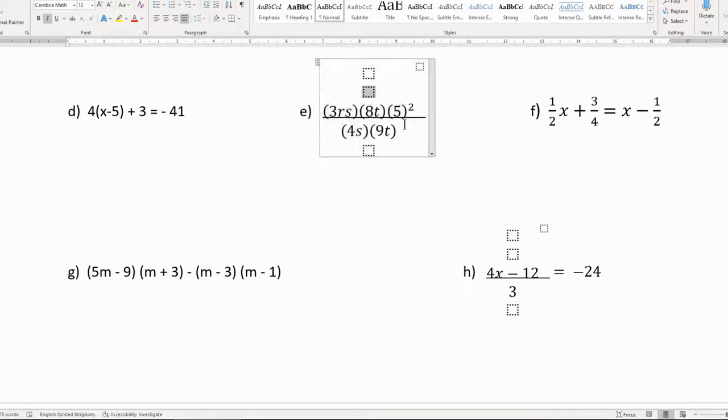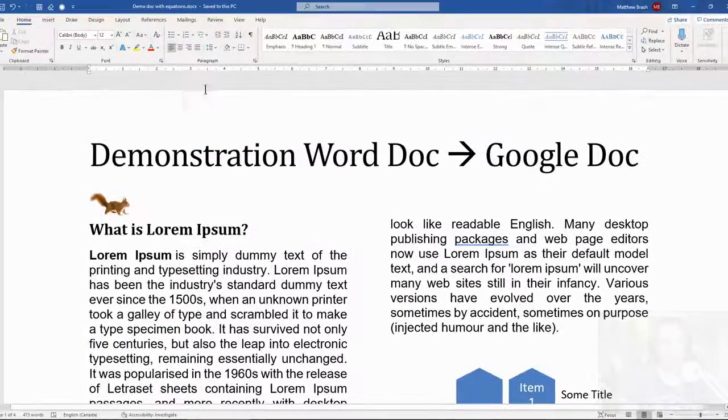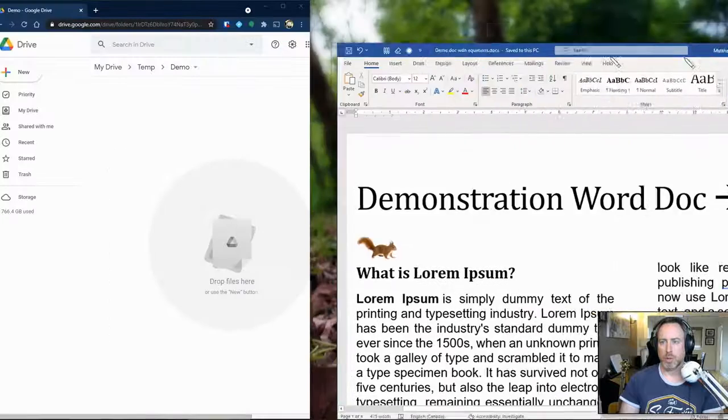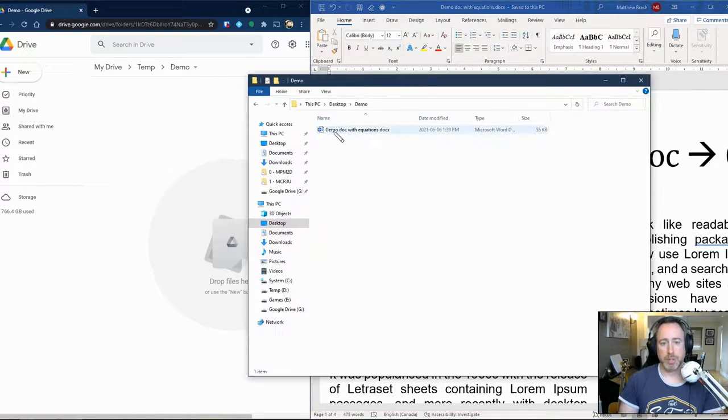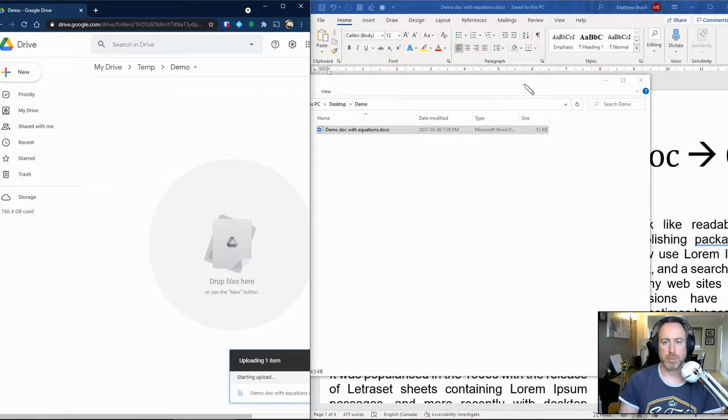If we take a look at this equation, what they did was they used this formatting to make the fonts bigger. And we're going to have to take a look at what that's going to look like when we convert it to a Google Doc. So I've just saved my Word document. Here's my empty Google Drive folder. So here's the document here on my PC. I'll just upload it to my Google Drive.